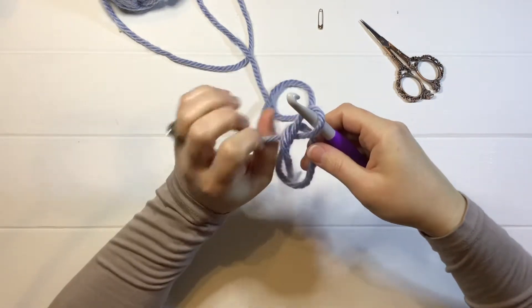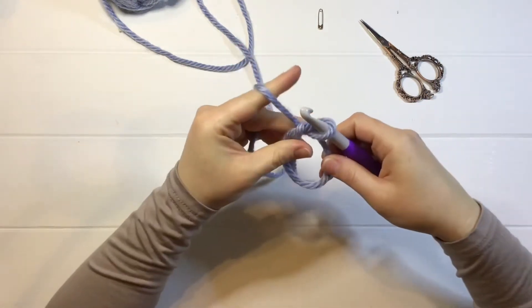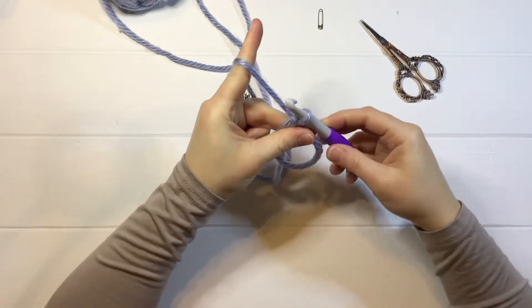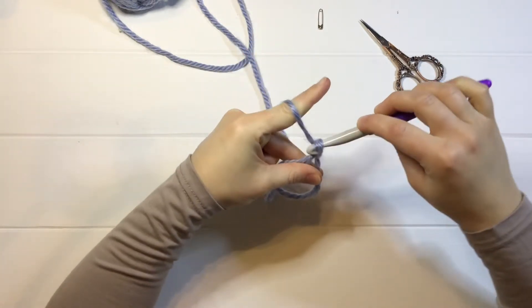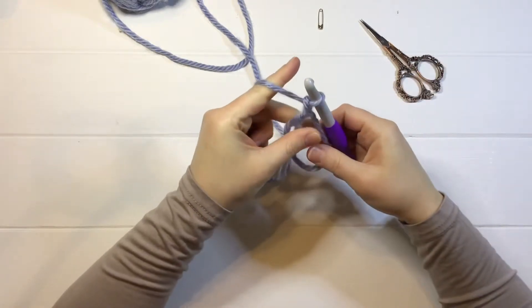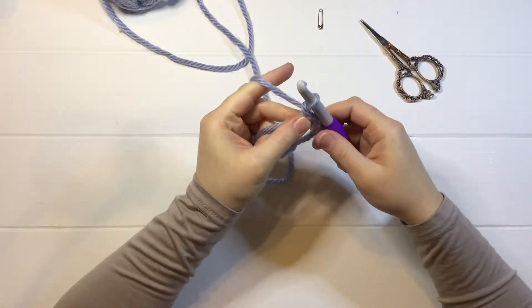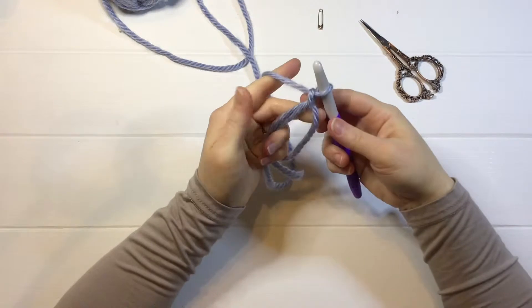Then grab this back piece, tighten everything up like that, and then you're going to do a little slip stitch here. That does not count as a chain one or anything in your pattern. That just closes your circle.